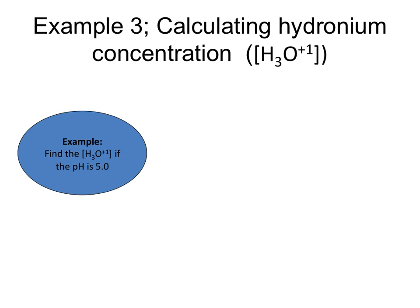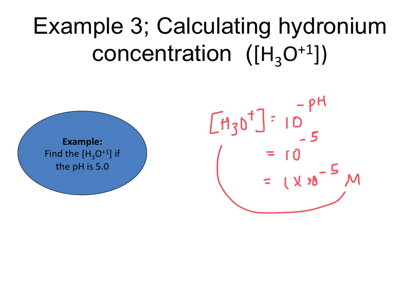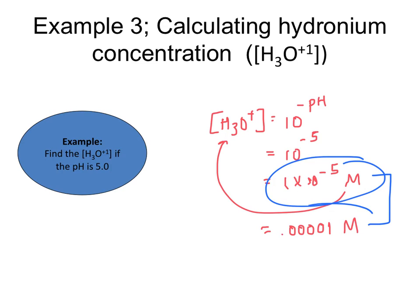In this next example, we're going to do the reverse. Now I'm giving you the pH and you need to find the hydronium ion concentration. The hydronium ion concentration can be solved by taking 10 and raising it to the negative pH value. In this case the pH is 5, so we take 10 to the negative 5th. Your calculator will give you 1 times 10 to the negative 5th molarity. Your calculator might also give you 0.00001 M — don't forget that those two numbers are the same: one is in scientific notation, one is in ordinary notation.